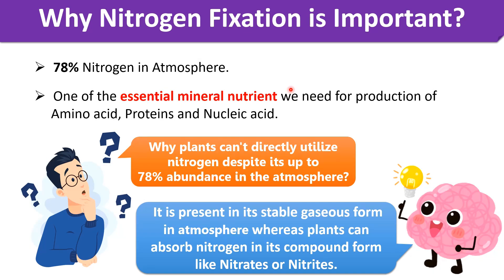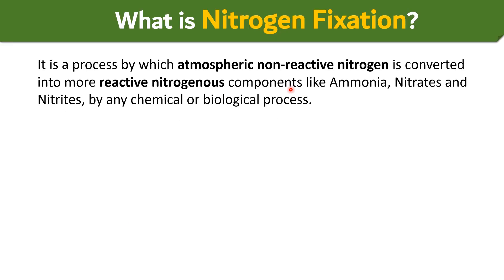So how do we use it? We can use it by converting it into an unstable nitrogen form by the process known as nitrogen fixation. Nitrogen fixation is the first stage of the nitrogen cycle. In this process, the atmospheric non-reactive nitrogen is converted into more reactive nitrogenous compounds such as ammonia, nitrates, or nitrites by specific bacteria or other natural and industrial methods.